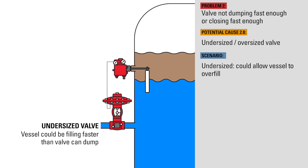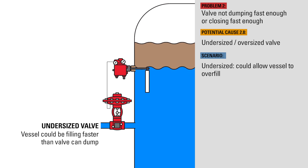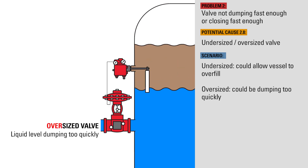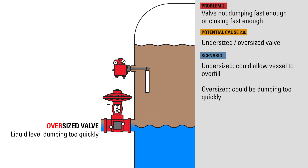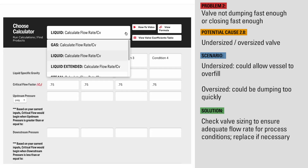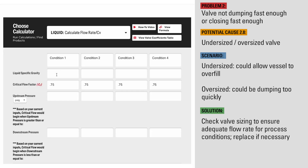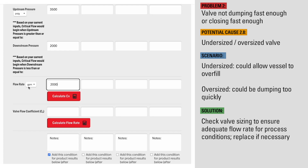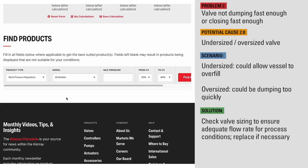An undersized valve could allow the vessel to overfill because it can't dump the liquid fast enough. An oversized valve could be dumping too quickly, not giving adequate time for the actuator to fully close the valve before the liquid falls below a critical level. Double check the sizing of the valve to ensure adequate flow rate for process conditions, and replace the valve if necessary.